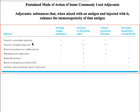This chart shows some common adjuvants, for example Freund's incomplete adjuvant, Freund's complete adjuvant, aluminum potassium sulfate, Mycobacterium tuberculosis, bacterial lipopolysaccharide, and synthetic polynucleotides. Freund's adjuvants boost the immune system by increasing antigen persistence at the site of injection. Bacterial polysaccharides enhance co-stimulatory signals, and synthetic polynucleotides can stimulate lymphocytes non-specifically. These mechanisms result in higher antibody titers.